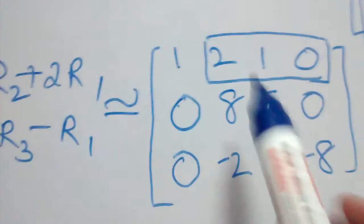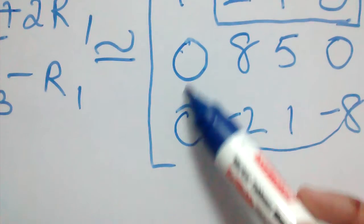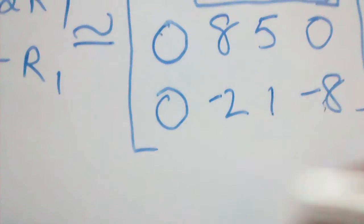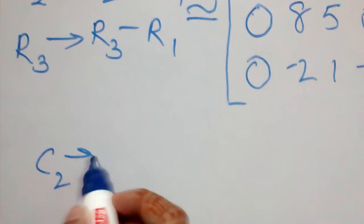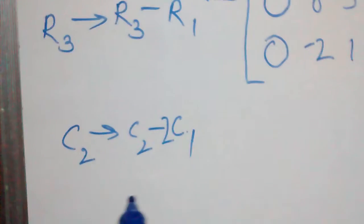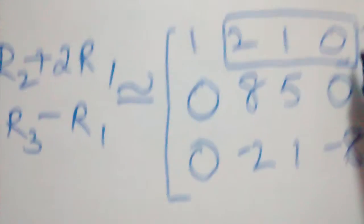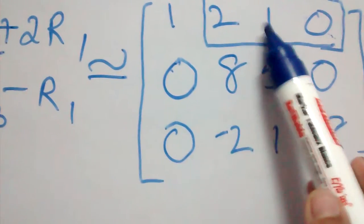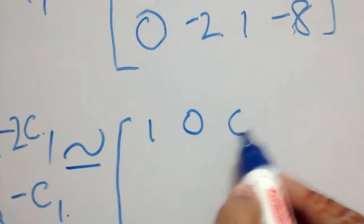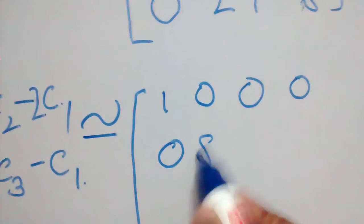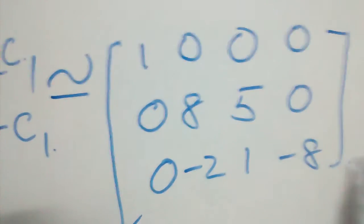Now we apply column operations to make the elements to the right of the first pivot zero. We use column operations because the already-zero elements in column 1 will not be affected. The operations are: C2 → C2 - 2C1 and C3 → C3 - C1. We do not write any operation for C4 because that element is already zero. The resulting matrix is [1, 0, 0, 0; 0, 8, 5, 0; 0, -2, 1, -8].